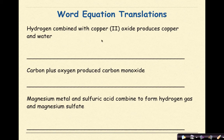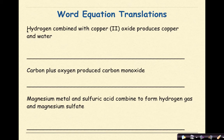We're going to read the equation that is given to us and translate it into a symbolic expression. Hydrogen combined with copper 2 oxide produces copper and water. The first thing we have to remember here is that hydrogen is a diatomic, so when we represent that, it is going to be H2.